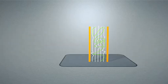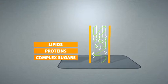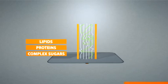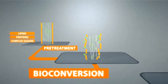In most cases, however, the waste streams contain a mixture of complex organic compounds, such as complex sugars, proteins, lipids, and so on. Then they first need to be pre-treated to enable the bioconversion step.